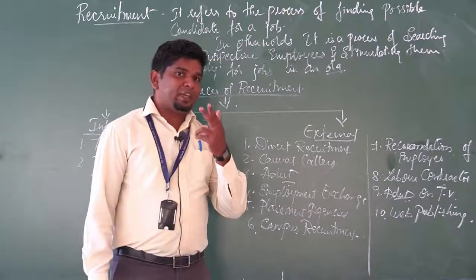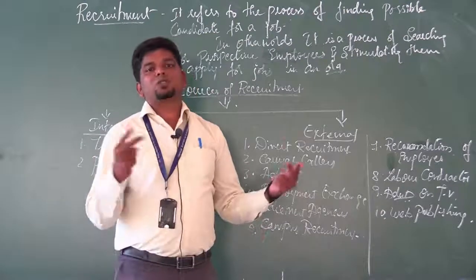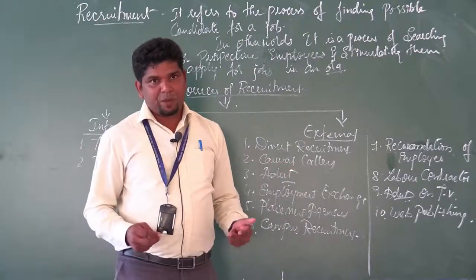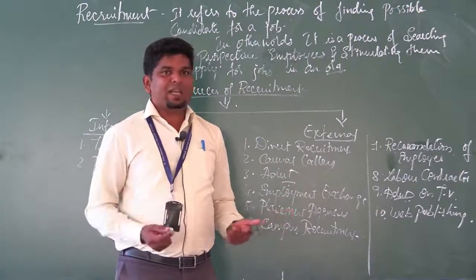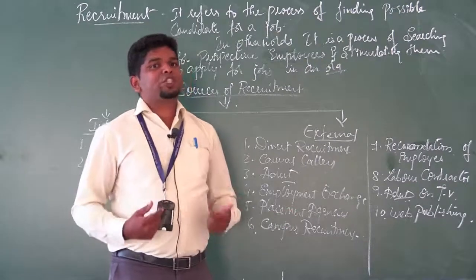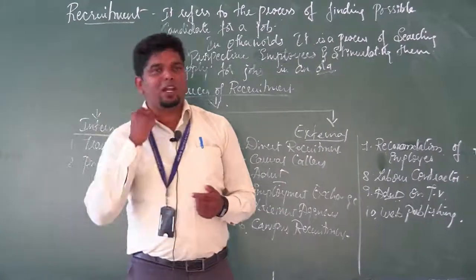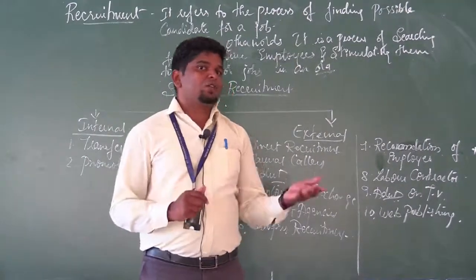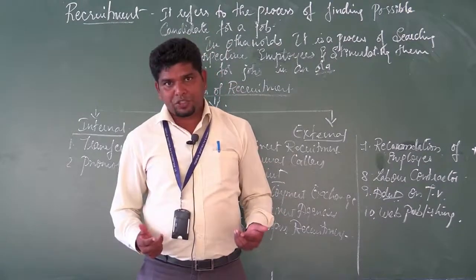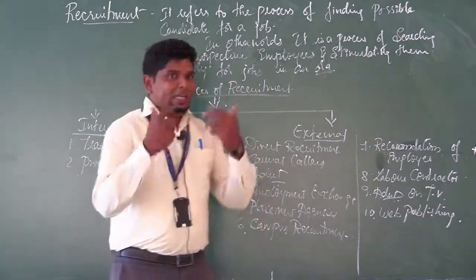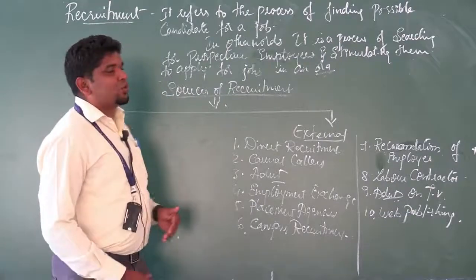We need two types of laborers: skilled laborers and unskilled laborers. Technically, skilled laborers are called white-collar laborers, and unskilled laborers are called blue-collar laborers. For finding these employees, we have some sources of recruitment.